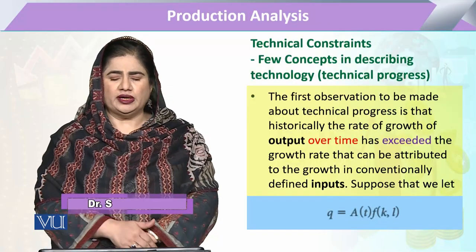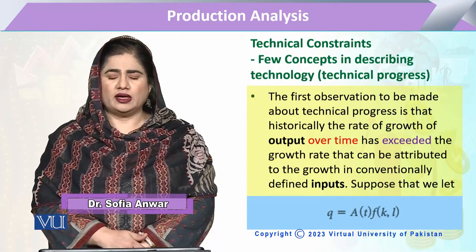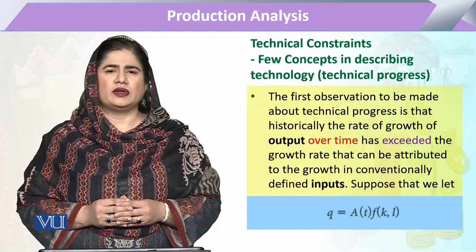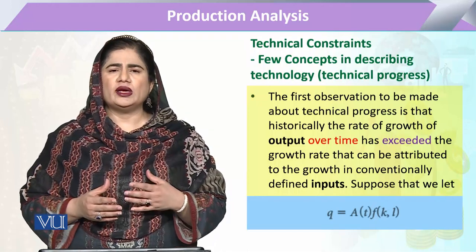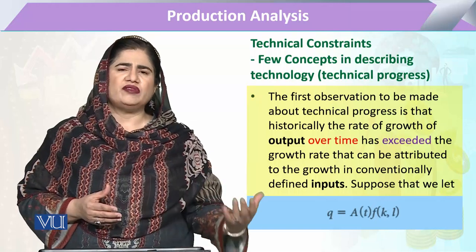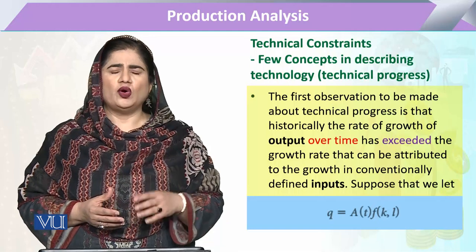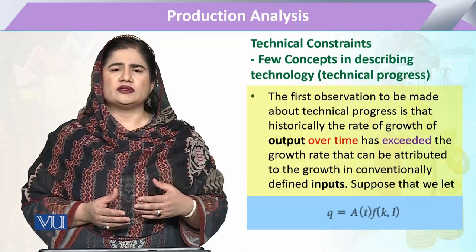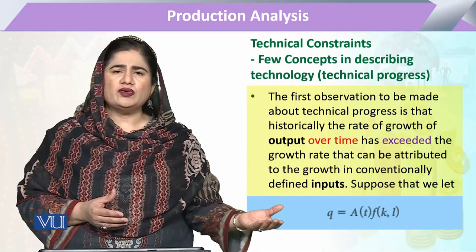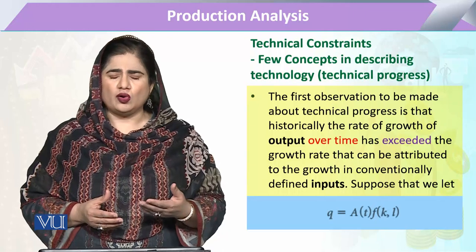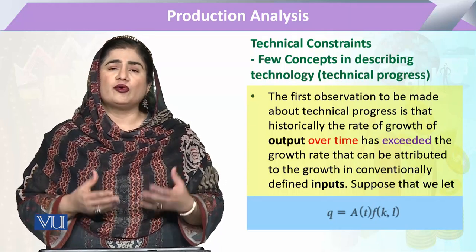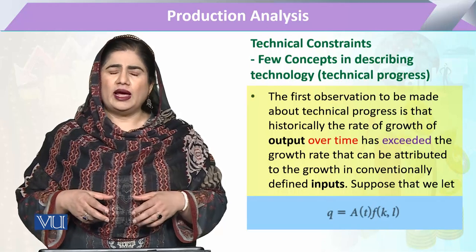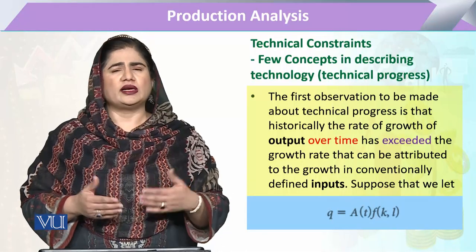Under production analysis, we are going to study the concepts describing technology. The concept is called technical progress. Technical progress occurs when, comparing any activity to its previous period, the increase in output is more than what was utilized before. When the rate of growth or rate of increase in output due to utilization of certain inputs in this period, compared to the previous period, is more — there is technical progress.